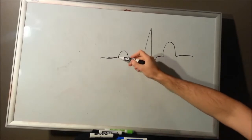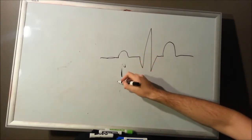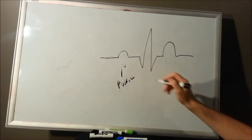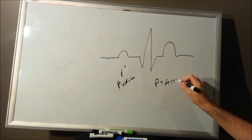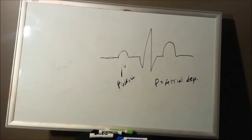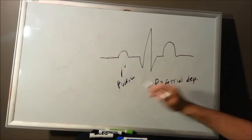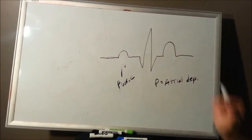Next, you're going to have a small upward deflection called the P wave. That P wave represents atrial depolarization. Your SA node creates an impulse that travels through the atria, causing that muscle to contract. That action potential causing the muscle to contract is represented in the P wave.